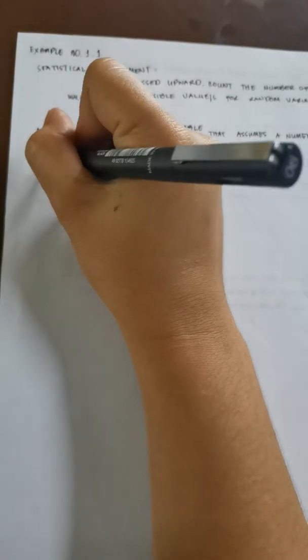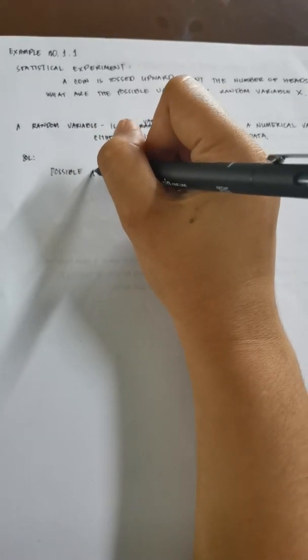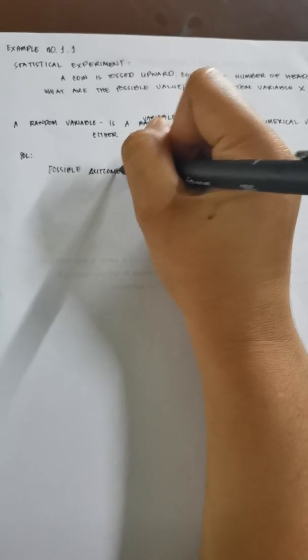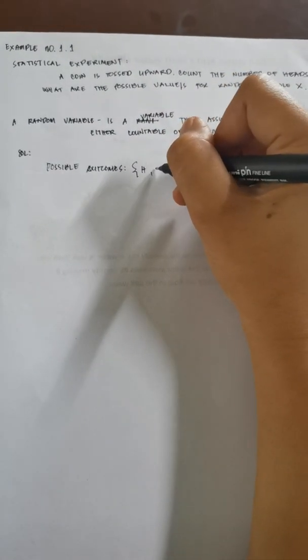So remember always that when we are going to toss a coin, there is only two possible outcomes. Those outcomes are the possible outcomes for tossing a coin or possible outcomes are only head and tail. The set of outcomes is what we call the sample space. So now, how can we attain random possible values for the sample space? First, if we were going to toss a coin, and we have a condition here, we're going to count the number of heads.